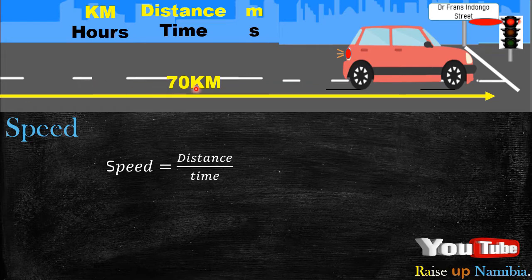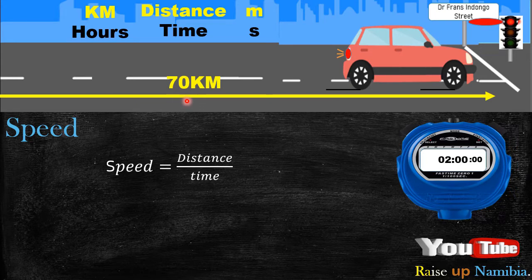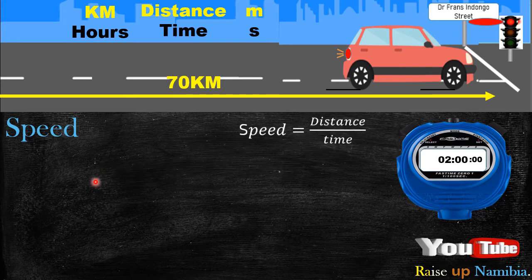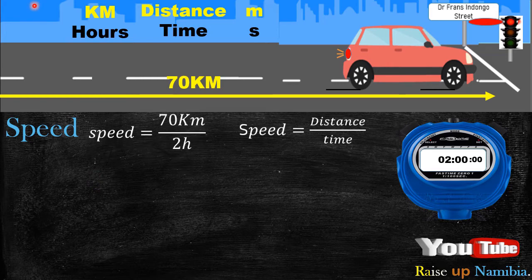Mike stays in Okahandja but works in Windhoek and travels a 70-kilometer distance, covering it in two hours. What is his average speed? Let's move the formula up and substitute.